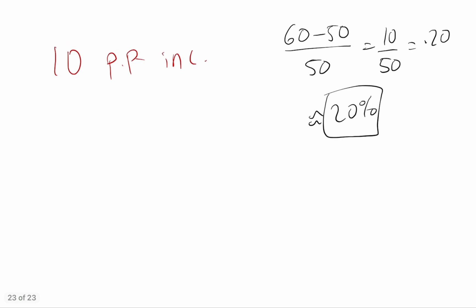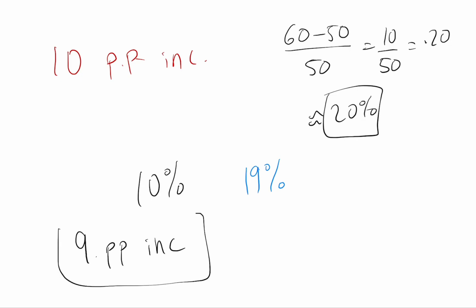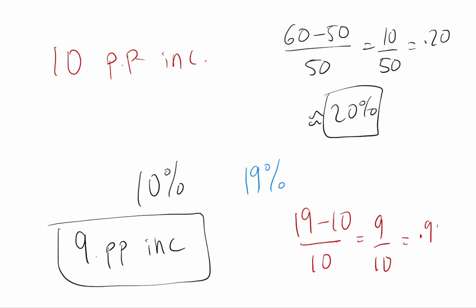So now let's go back to the original example. We had 10% of the control group attending grad school and 19% of the treatment group attending grad school. One correct way to describe this change is a 9 percentage point increase in grad school enrollment. Another correct way is to calculate the actual percent change: 19 minus 10 over 10 is 9 over 10, which is 0.90 — that is in fact 90%. So it's not incorrect to say 90% increase in enrollment rate, but it's certainly not a 90 percentage point increase, which would mean going from 10% up to 100%.